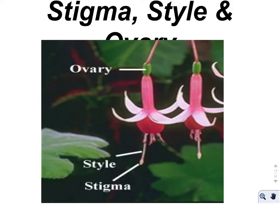Here's a picture of the stigma, style, and ovary — these are the female reproductive parts of the flower. So if you have a bee or a hummingbird flying into one flower, it's going to carry pollen to the next flower, and then reproduction occurs from the pollen traveling up to the ovaries.